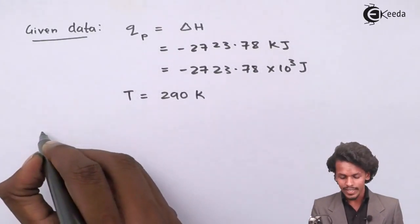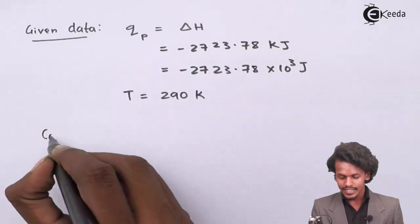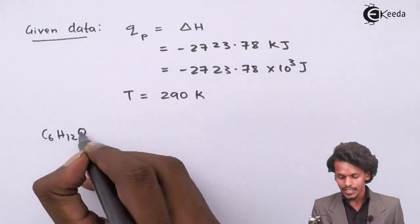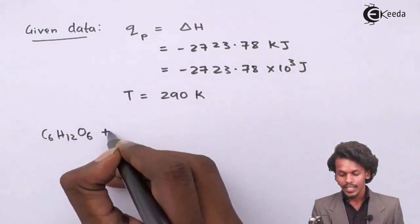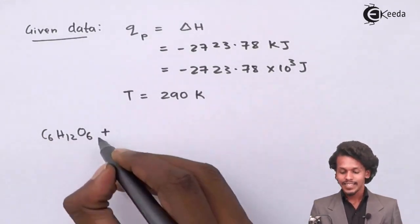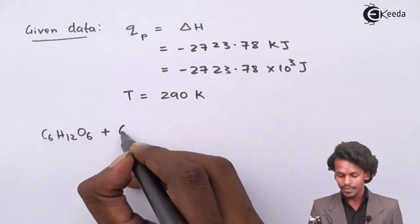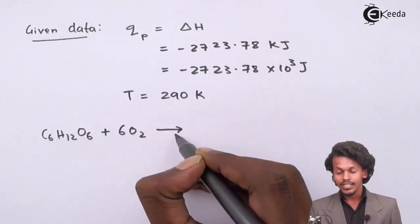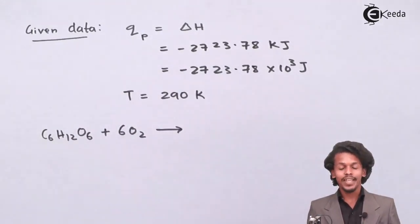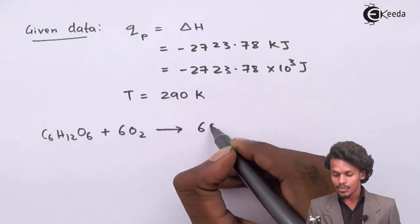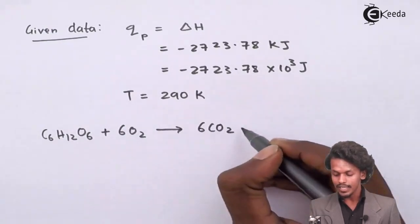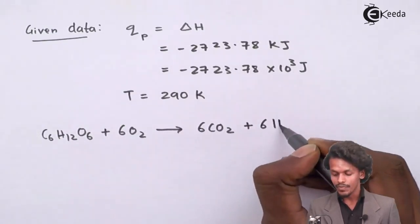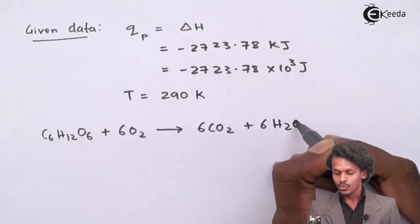For glucose, we know that C6H12O6 requires 6 moles of oxygen to produce 6 moles of carbon dioxide plus 6 moles of H2O.